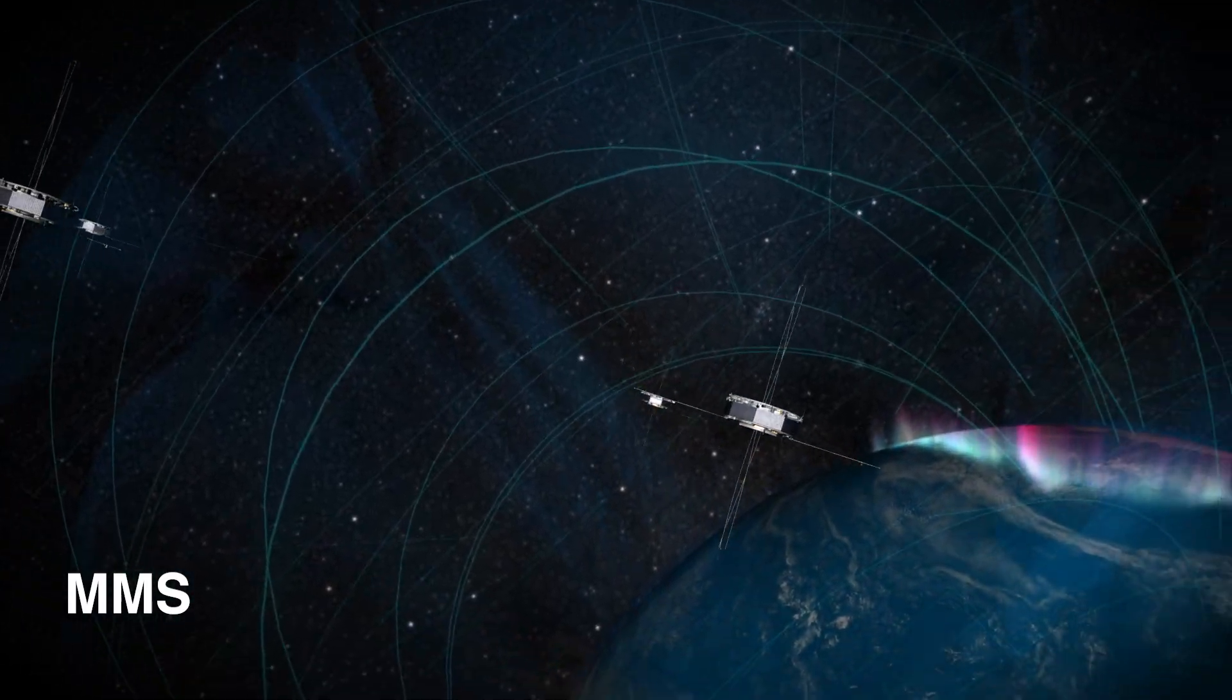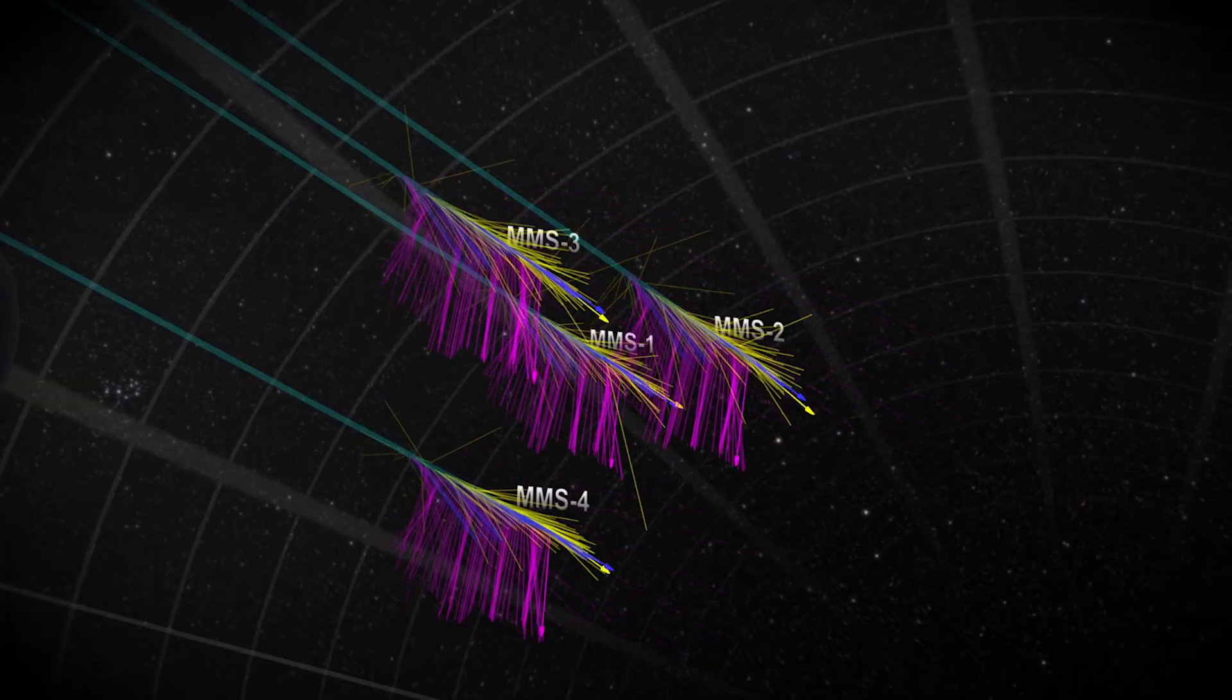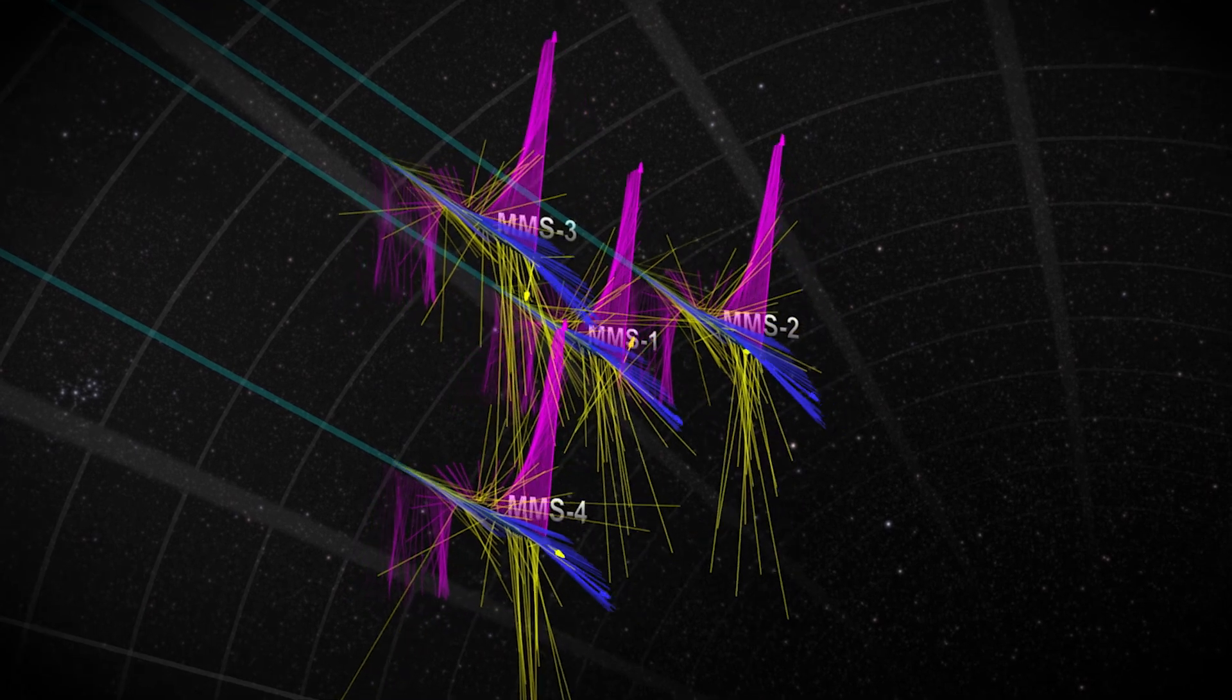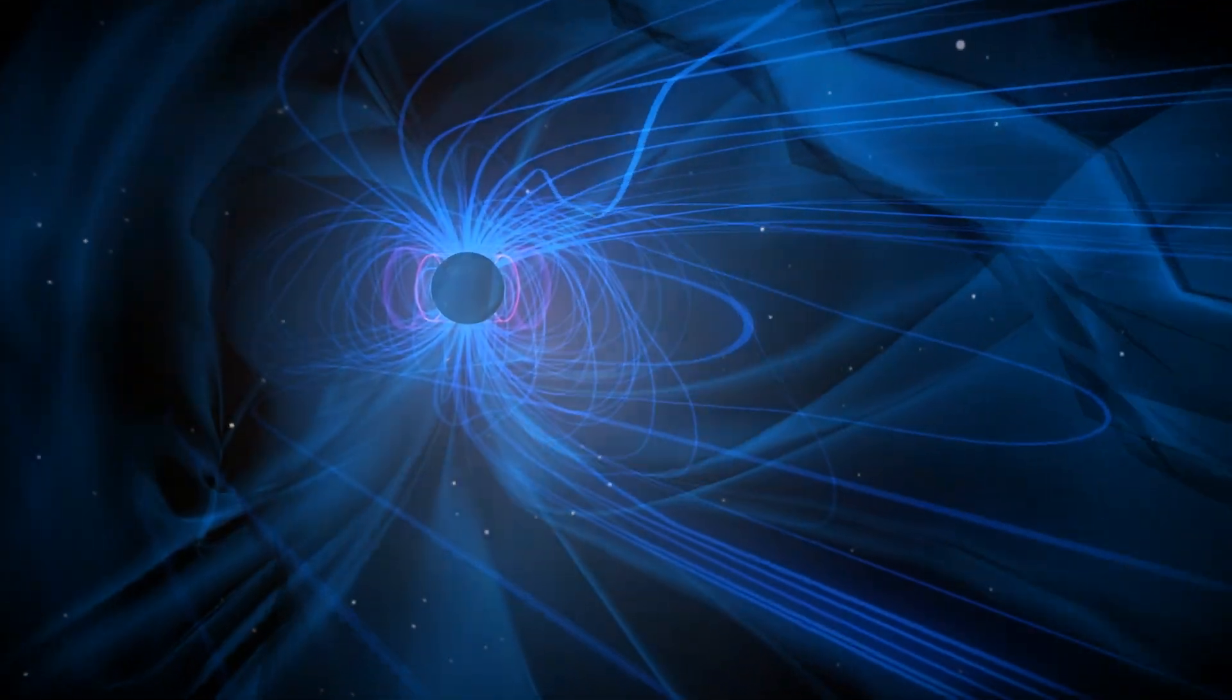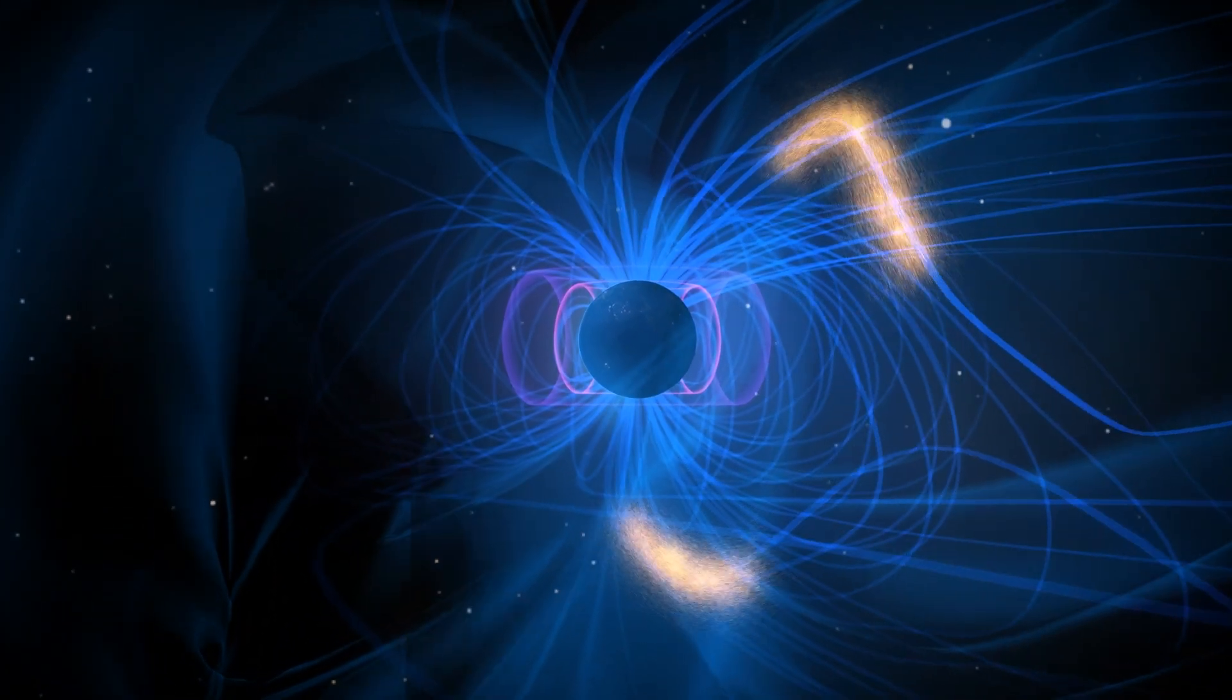MMS uses four identical spacecraft to measure magnetic fields and particles in 3D, 100 times faster than previous missions. This has revealed new insights on the small-scale details of magnetic reconnection and the nature of plasma itself.